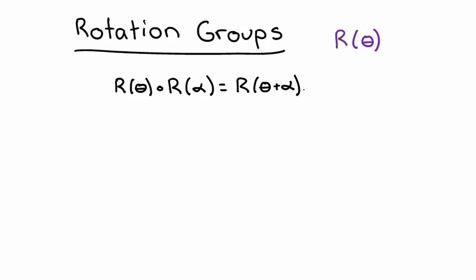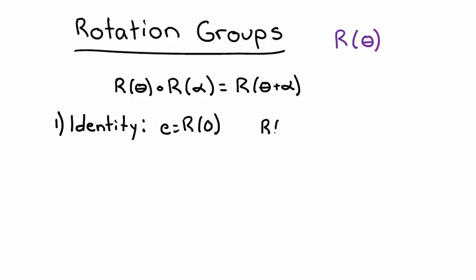Before we do anything with this group, let's take what we learned from the last lesson and verify that the set of rotations in a plane does form a group. The first thing we check, as always, is the identity. I'll claim that the identity is the rotation by an angle of zero, or in other words, not rotating the system at all. We see that the composition of a rotation by angle theta and a rotation by angle zero, using our rule for adding the angles, yields a net rotation by theta plus zero, or just a rotation by theta. This is the original element, so the identity is looking pretty good.